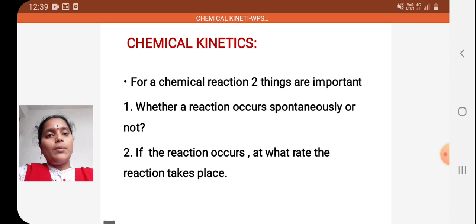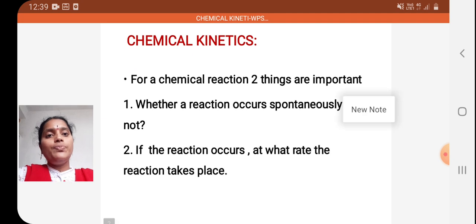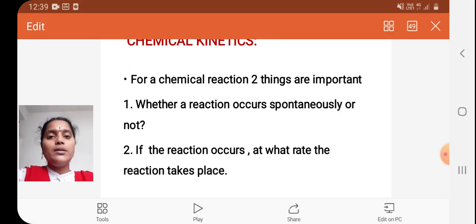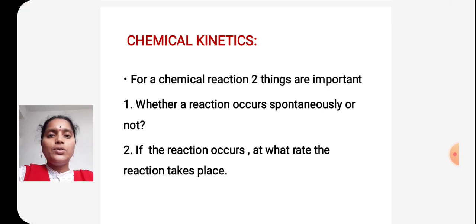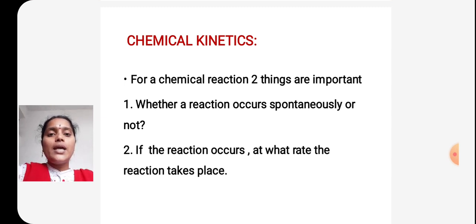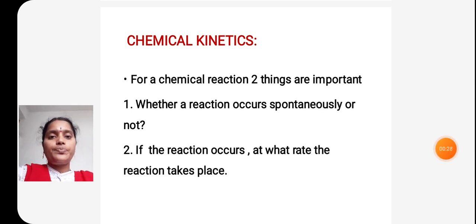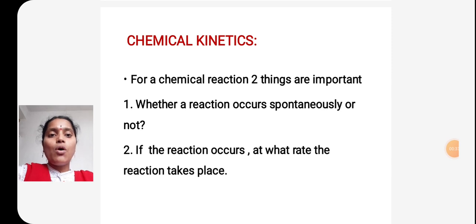Before going to the topic chemical kinetics, as you know, in a chemical reaction, reactants are converted into products. For a chemical reaction, two things are important. One is whether a reaction takes place spontaneously or not. Second, if the reaction occurs, at what rate does the reaction take place?